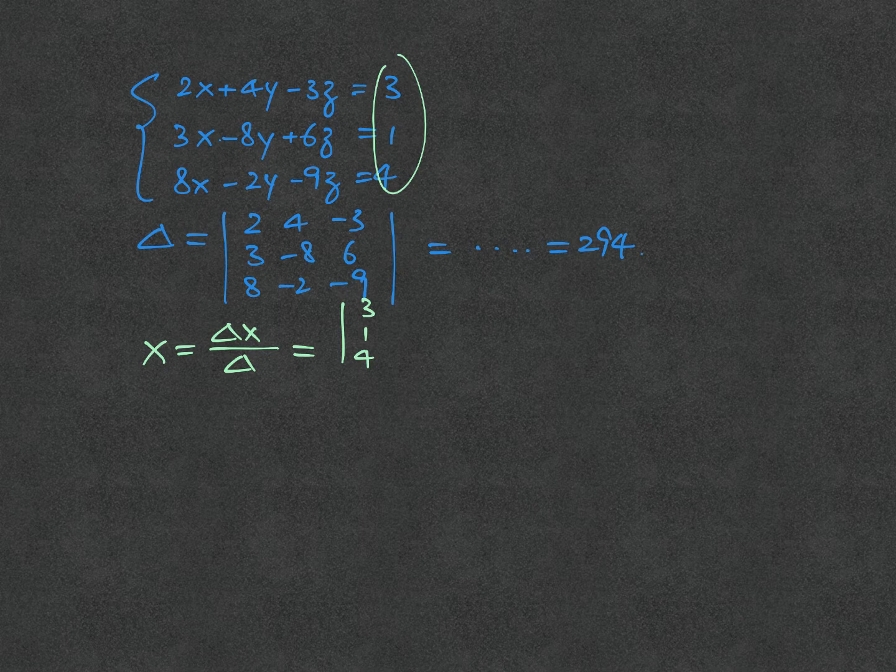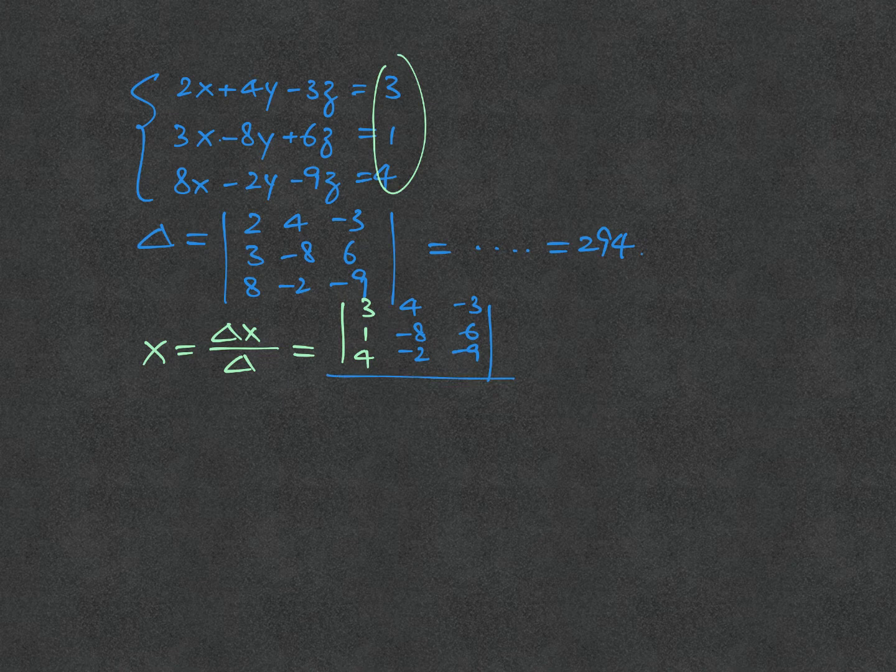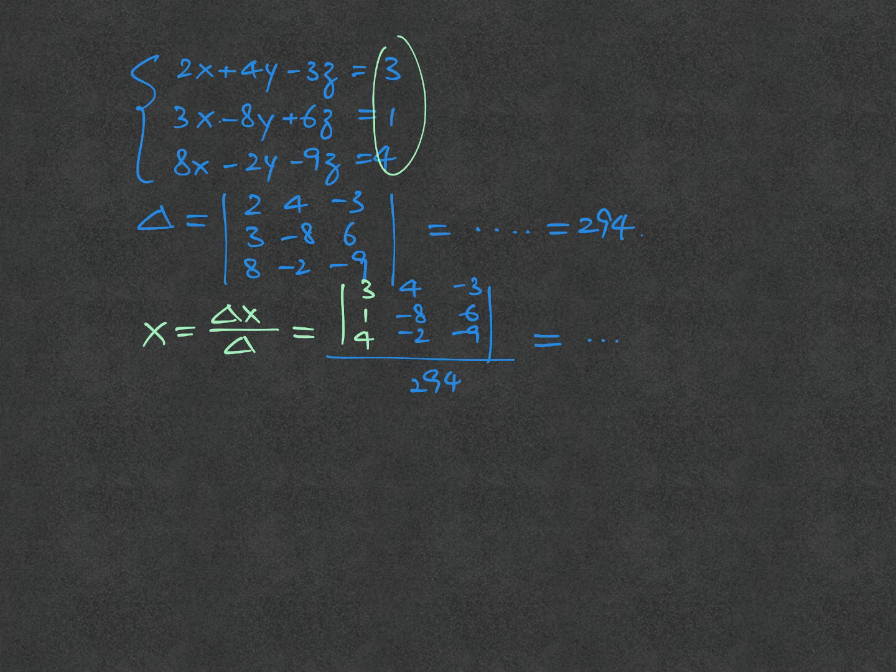The other numbers follow: 4, minus 8, minus 2, minus 3, 6, and minus 9, respectively. The denominator is 294 directly. Do the calculation very carefully, and I obtain 1.